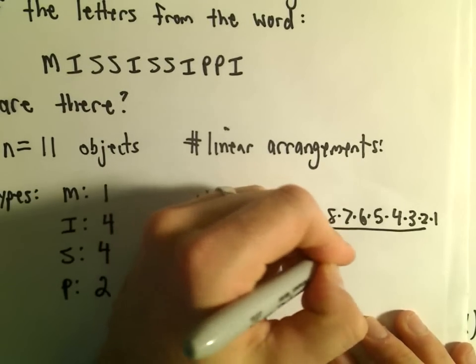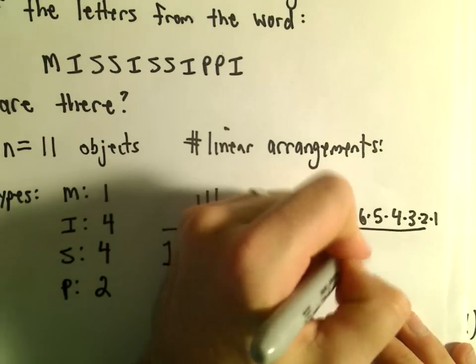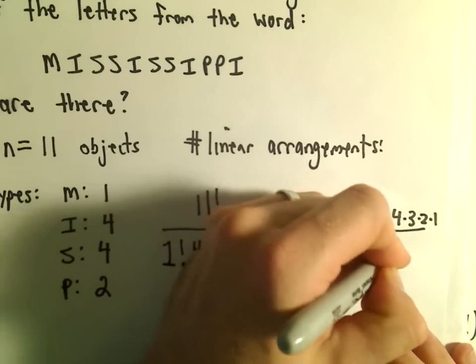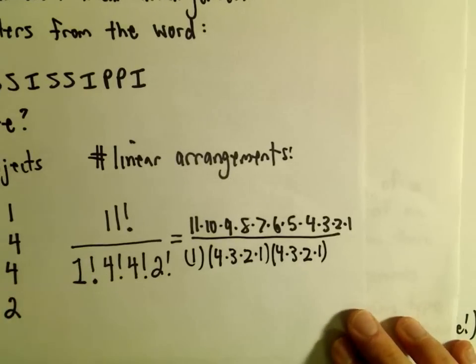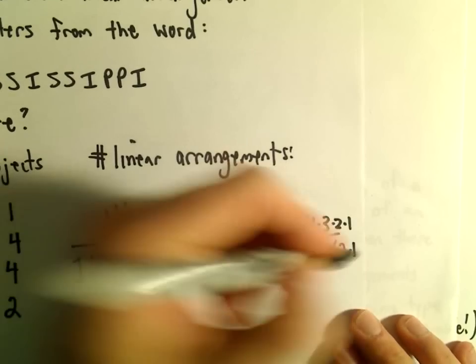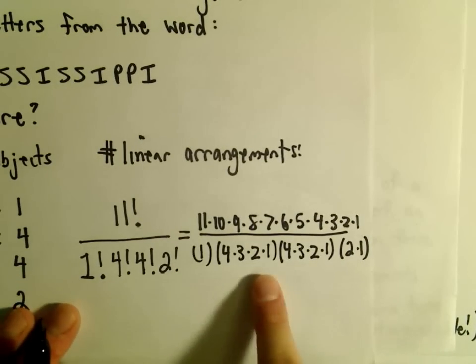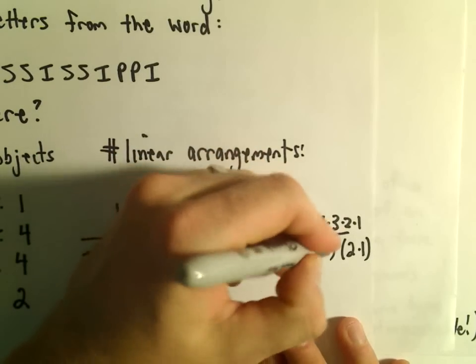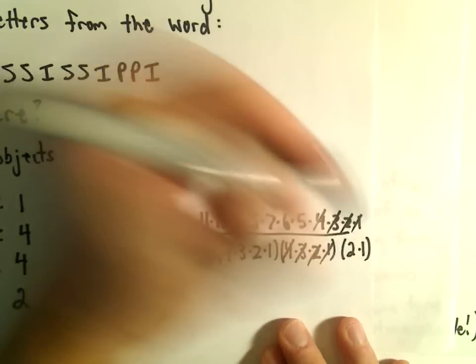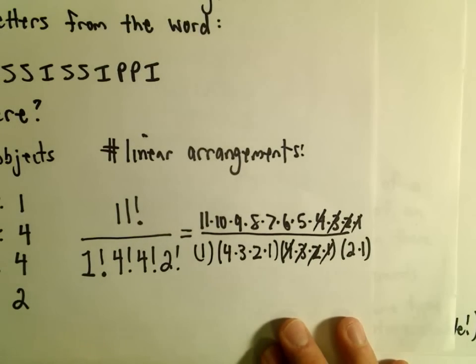1 factorial is just 1. 4 factorial: 4 times 3 times 2 times 1. Another 4 times 3 times 2 times 1 from our other 4 factorial, and then 2 factorial is just 2 times 1. Usually I cancel out the largest factorials that I can, so we can cancel out a 4, 3, 2, and a 1 with a 4, 3, 2, and 1 in the numerator.